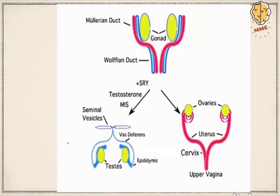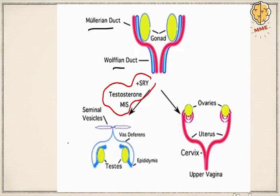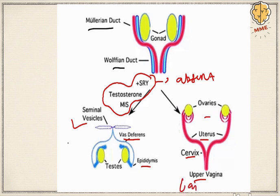To summarize internal genitalia development: if SRY gene, testosterone, and Müllerian inhibitory factor are present, male internal genitalia develop — seminal vesicles, vas deferens, and epididymis. If these are absent, female internal genitalia develop — uterus, cervix, upper vagina, and ovaries. Gartner's duct occurs in the upper vaginal structure and is important to remember.